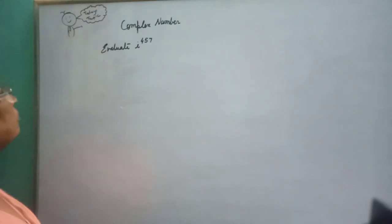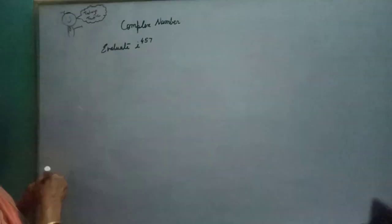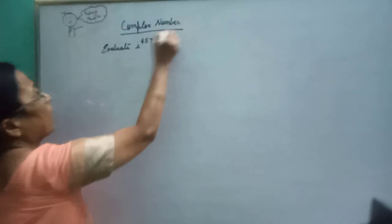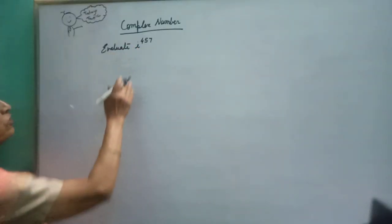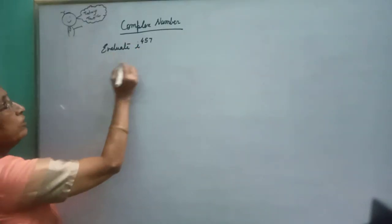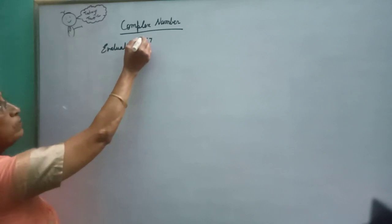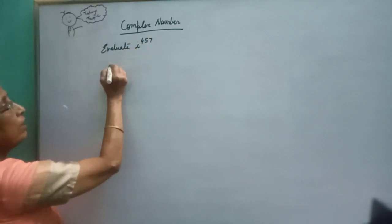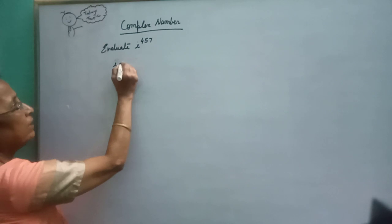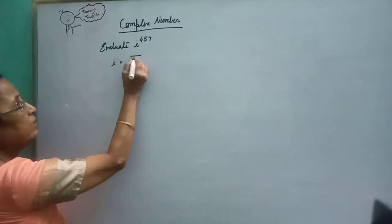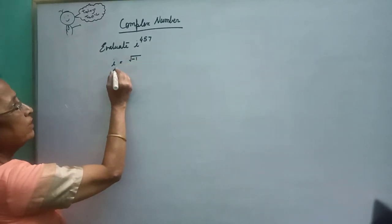Welcome viewers. Today we'll evaluate complex number i to the power 457. In order to find iota to the power 457, we define i is equal to root over minus 1, so i squared is equal to minus 1.